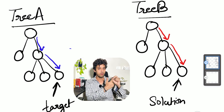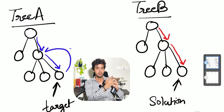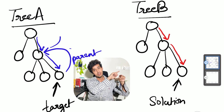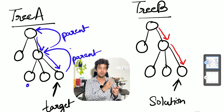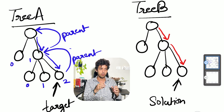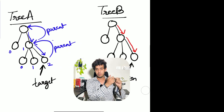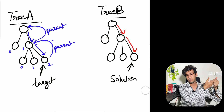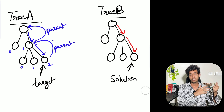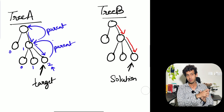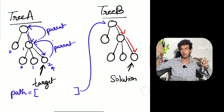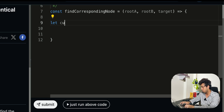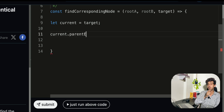We know there is a target. We know that target.parentNode will give me the parent. I go to that parent and keep going till I reach the root of tree A. In my path, I keep noting each index of the children. This way I'll be able to store the information that this particular target node is the fourth child of the parent. We just need to store the index of this particular node element. Let's have a current property pointing to the target.